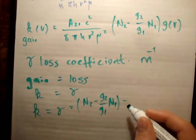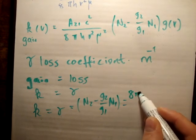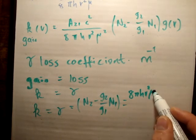...you're going to have that N2 minus G2 over G1 times N1. And that is going to be equal to, I'm really running out of room, but I'll try. So we're going to have 8 pi H nu squared, or nu squared...